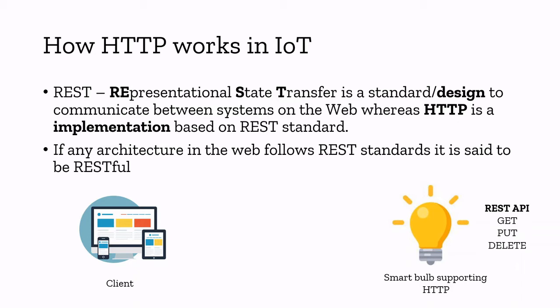If a device is working based on this standard, in order to access the device, the device should provide a REST API. API means Application Programming Interface — basically it's a set of rules in order to make programs talk to each other or web services talk to each other. So let's take an example. I have a client — it can be any of your smartphones, laptops, or browsers — and I have a smart bulb which supports HTTP and it's running a web server inside.